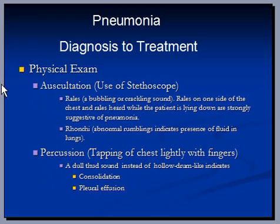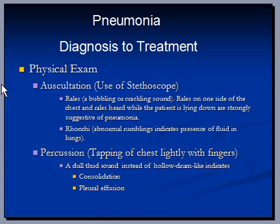In physical examination, we will focus on auscultation and percussion. Auscultation is the use of a stethoscope to hear sounds produced within the body. Rales, a bubbling or crackling sound heard on one side of the chest while the patient is lying down, are strongly suggestive of pneumonia. Ronchi, which is an abnormal rumbling sound, indicates the presence of fluid in the lungs. Percussion, which is tapping the chest lightly with fingers, returns a dull sound if there is consolidation or pleural effusion, or both.